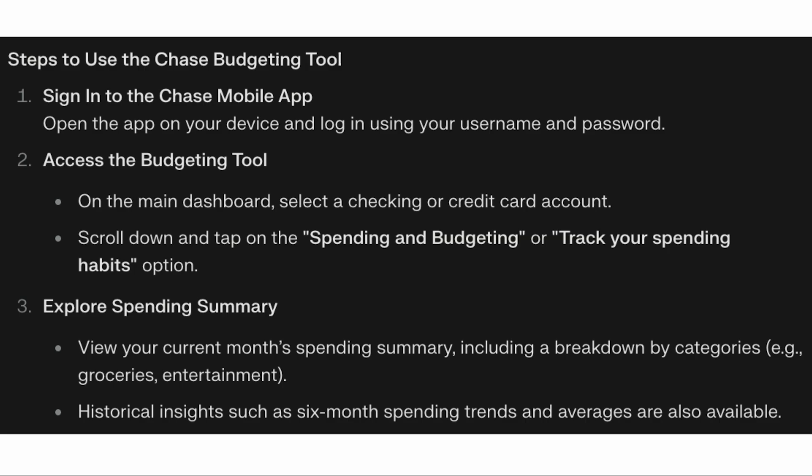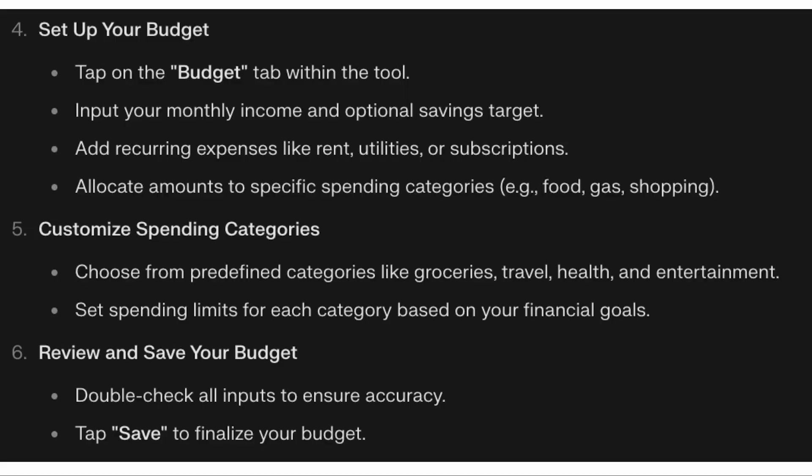Then explore the summary — view your current monthly spending with a breakdown by categories such as groceries, entertainment, etc. You can also look at historical insights like six-month spending trends and averages.